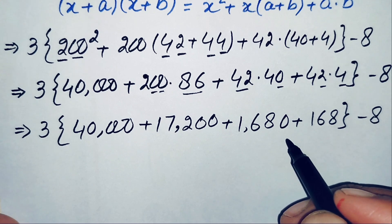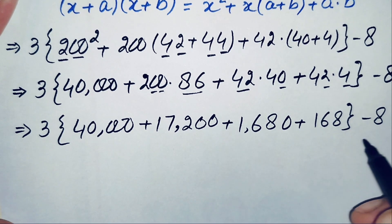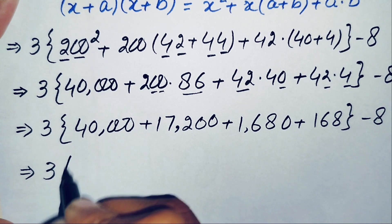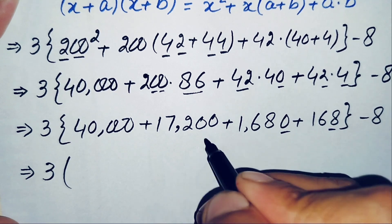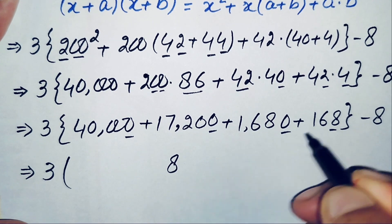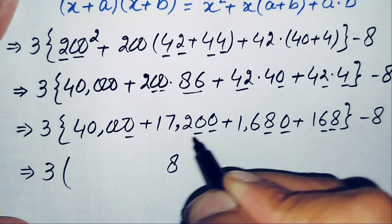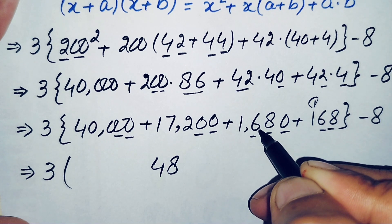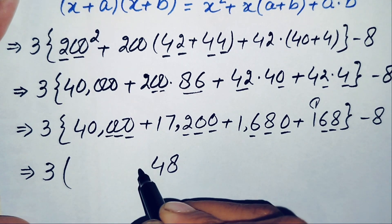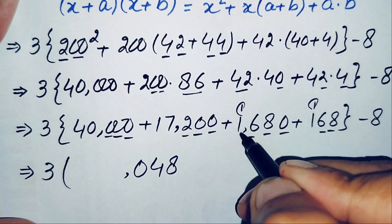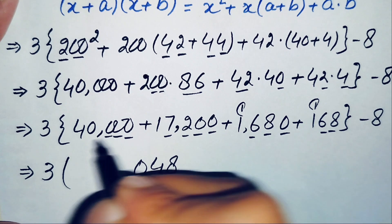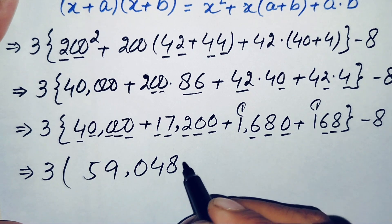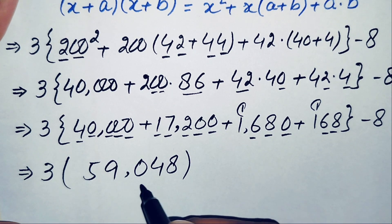Now we will add these numbers and then multiply the result by 3, and finally subtract 8. Adding: 8+0+0+0=8 in ones; 6+8=14, carry 1; 1+1+7+0=9; next digit 1+4=5. So the addition of these numbers gives 59,048.